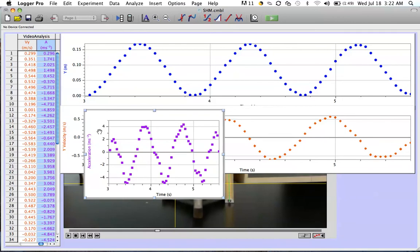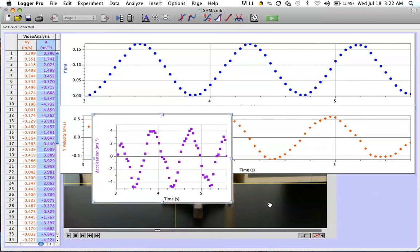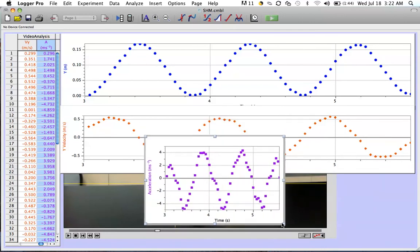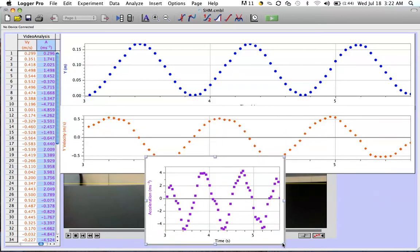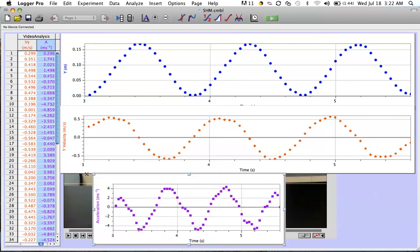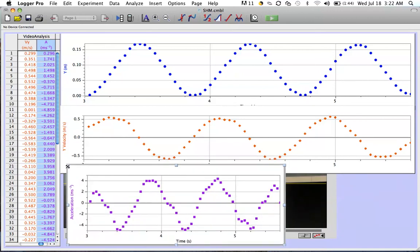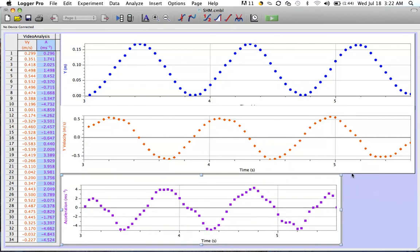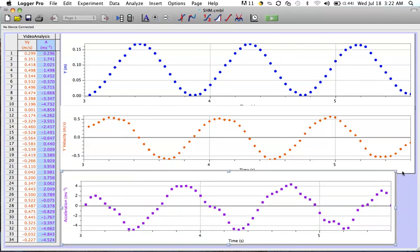So now I'll insert another graph that would be acceleration and time, and I will scale it so that we can see how the velocity, the displacement, and the acceleration all vary for the same object undergoing simple harmonic motion.